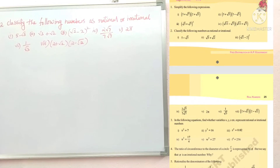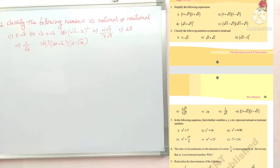Here is our second problem: classify the following numbers as rational or irrational. There are a total of seven problems given. We have to tell whether the given numbers are rational or irrational. Rational means the number should be in the form of p by q, and irrational means it is clearly non-terminating and non-recurring.